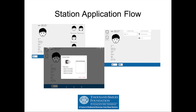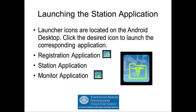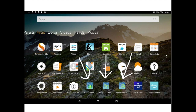Let's go in more detail through the flow of the station application, starting with the arrival of a child and including things like going away. To start, you need to launch the application by clicking the appropriate icon on the Android desktop. There are three applications: registration, station, and monitor. The station application is identified by a rotary logo in blue and a folder with a medical symbol. Clicking on that will launch the application. The one in the middle on the desktop screen is the station app you want to select when running this application at a chair or station.